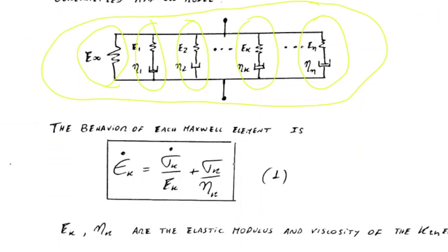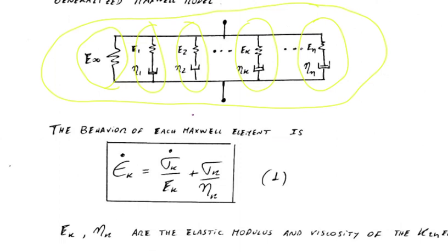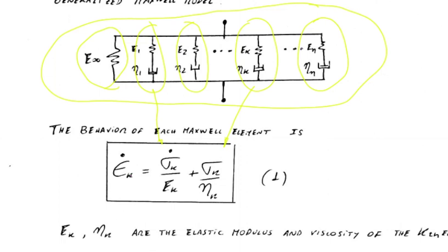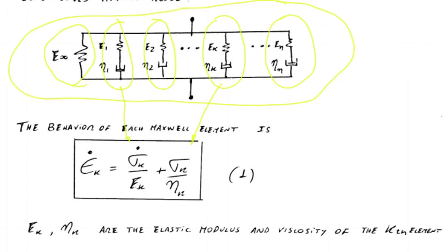As we saw before, the differential equation governing a single Maxwell element — let's take the general k-th element Eₖ, ηₖ — is: ε̇ = σ̇/E₁ + σ/η₁. For the k-th system: ε̇ₖ = σ̇ₖ/Eₖ + σₖ/ηₖ. The total sigma equals sigma_k, and nk and ek are just the elastic modulus and viscosity of the k-th element.